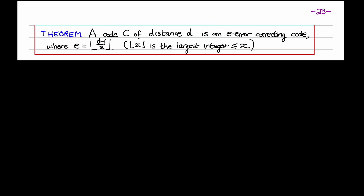The previous example illustrates that the error-correcting capability of a code depends on its distance. We can prove the following theorem: a code C of distance D is an E error-correcting code, where E is the floor of (D minus 1) over 2. The floor of a real number x is the largest integer at most x. For example, the floor of 3.5 is 3, and the floor of 3 is also 3.